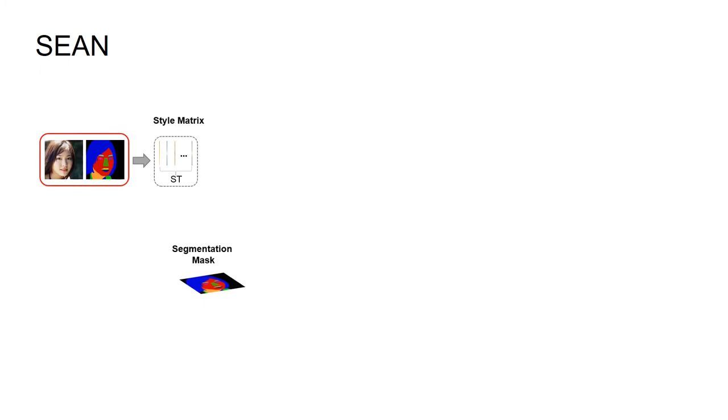To implement these ideas, we propose SEAN, a normalization layer that modulates the scales and biases of the generator activations by both the per-region style code matrix ST and segmentation mask M.